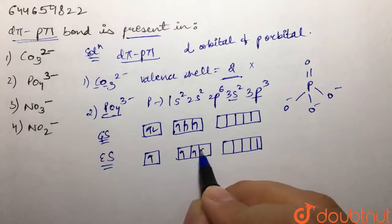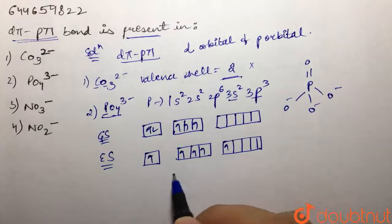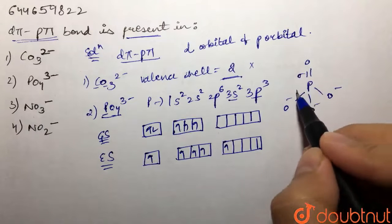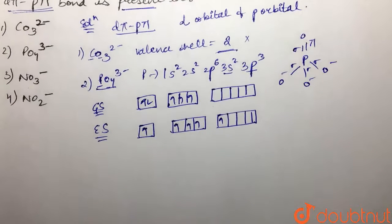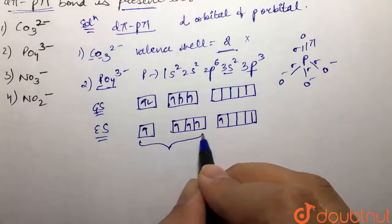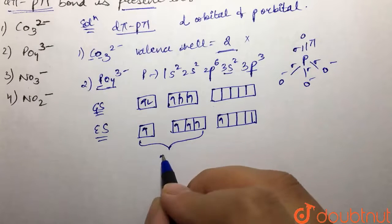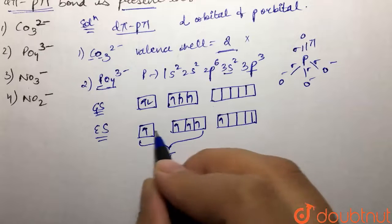First of all, sigma bonds are formed. So 4 sigma bonds would be formed with here. There would be formation of 4 sigma bonds with these orbitals, and then 1 pi bond would be formed like this.